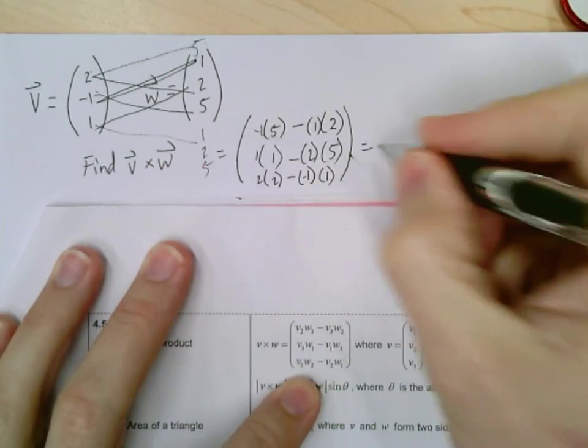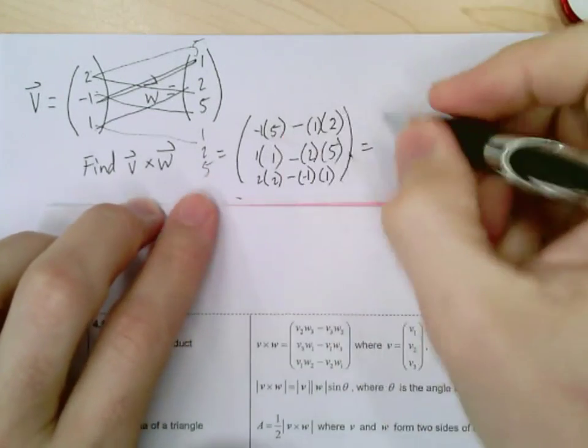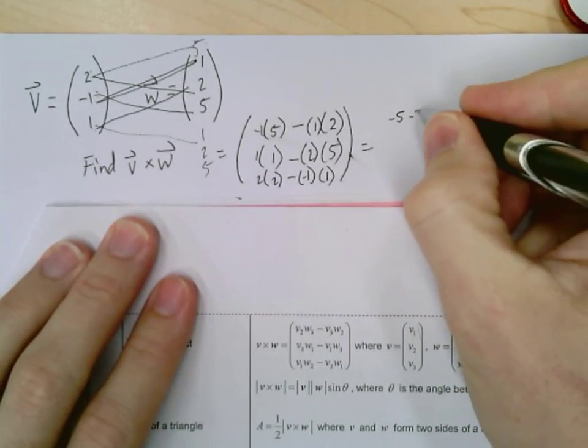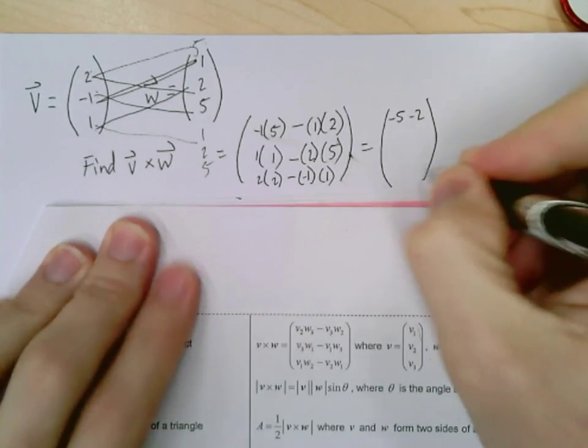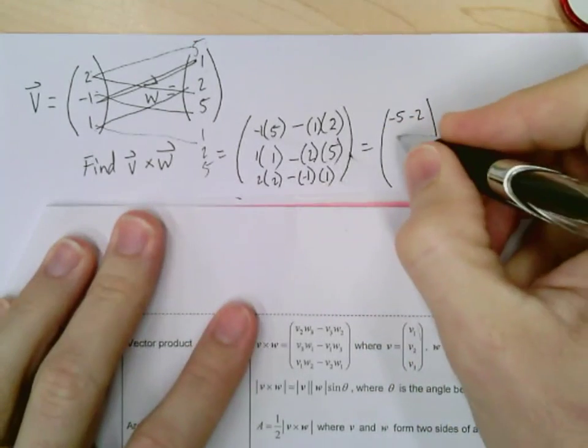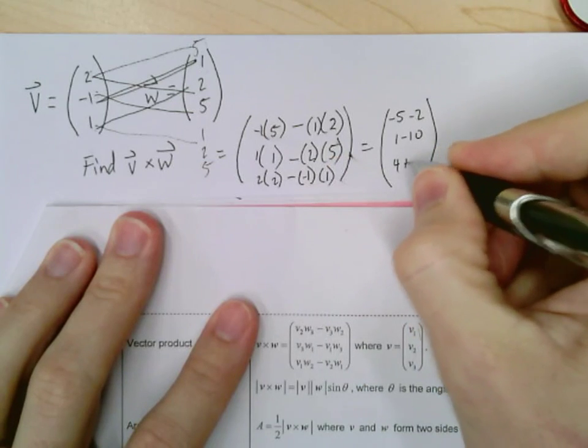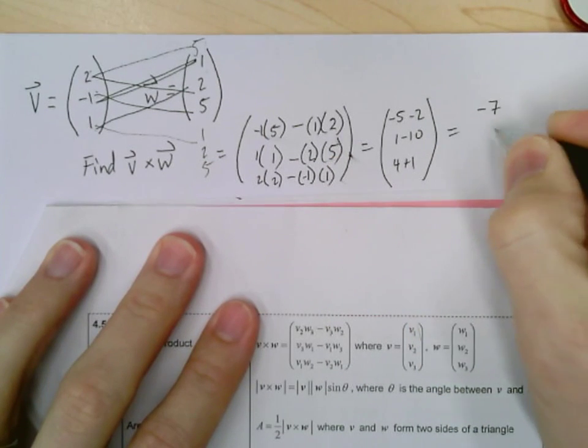Okay? So we put all these together. I do negative 1 times 5 would be negative 5 minus 2. I get 1 minus 10, and I get 4 plus 1. So my final vector will be negative 7, negative 9, and 5.